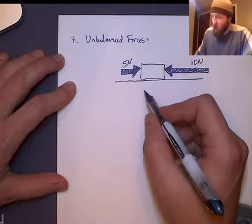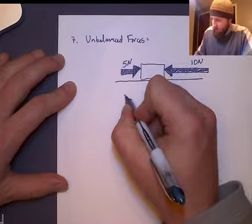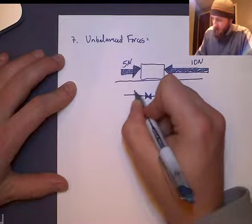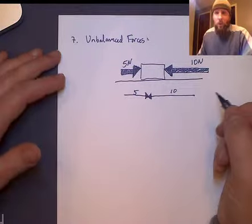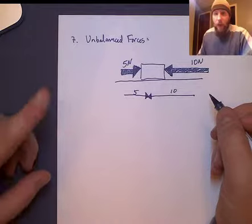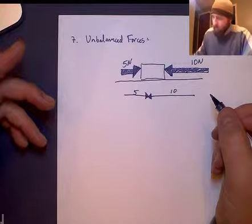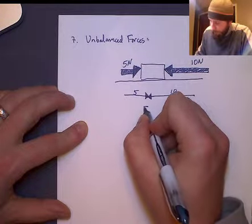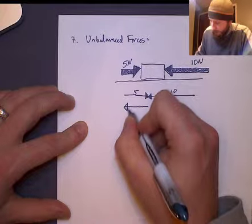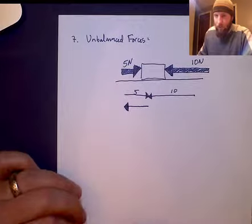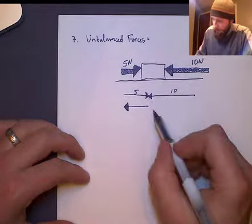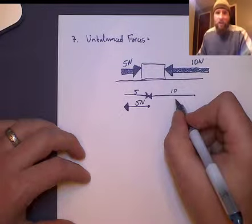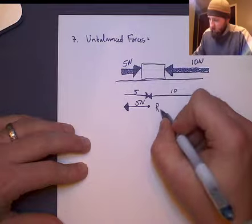Both forces are unbalanced, they're not the same, so we get a resultant. On a number line with five and ten, what's the resultant? If they're in opposite directions, we subtract. Ten minus five equals five. The resultant force is five newtons in the direction of the stronger force. Unbalanced forces result in what we call a resultant.